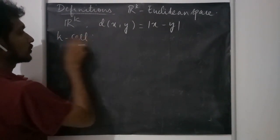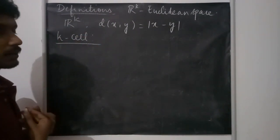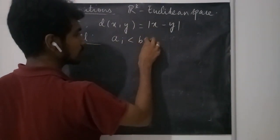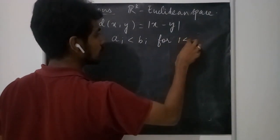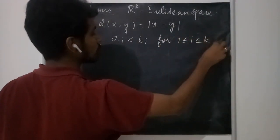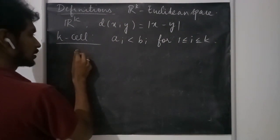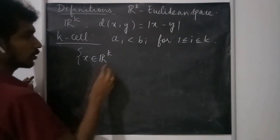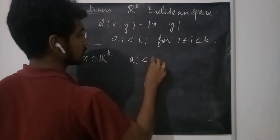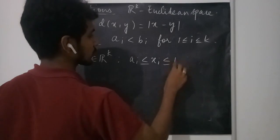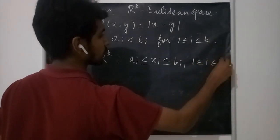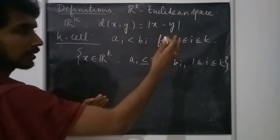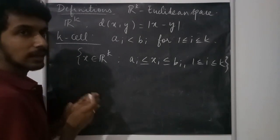We are going to define something called a k-cell. If we have a_i ≤ x_i ≤ b_i for all i from 1 to k, then the set of all points x in R^k satisfying this condition is going to be called a k-cell.